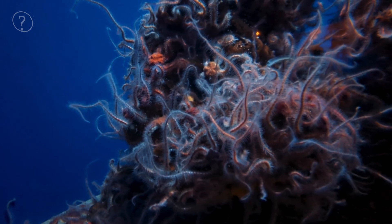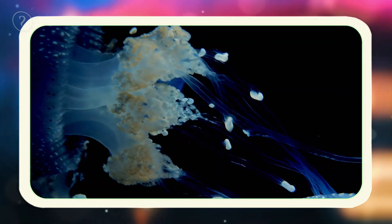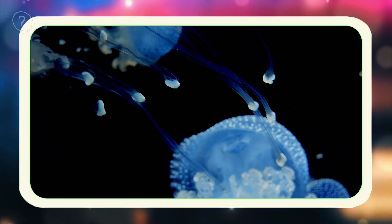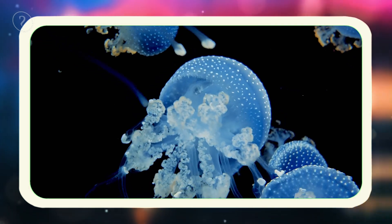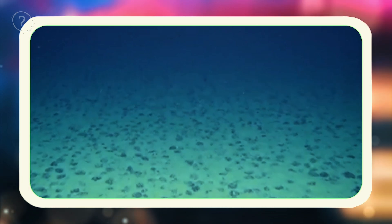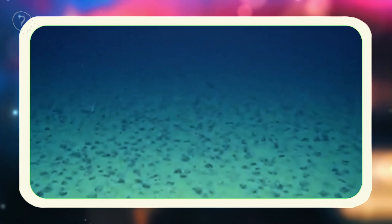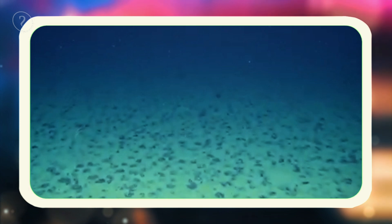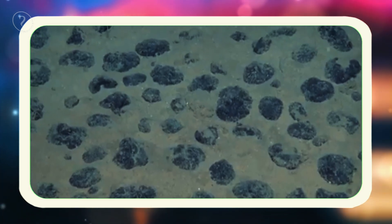So how exactly is this happening in the inky blackness of the deep sea? Scientists have found that in these lightless depths, oxygen appears to be produced by what are known as polymetallic nodules. These are naturally occurring potato-sized lumps of metal, rich in elements like manganese, nickel, and cobalt.